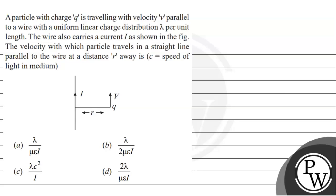Hello, let's read this question. The question says that a particle with charge q is traveling with velocity v parallel to a wire with a uniform linear charge distribution lambda per unit length. The wire also carries a current i as shown in the figure. The velocity with which particle travels in a straight line parallel to the wire at a distance r away is c equals to speed of light in medium.